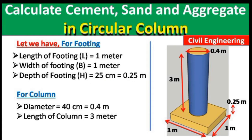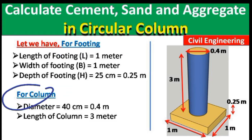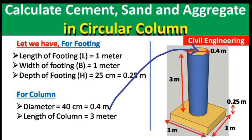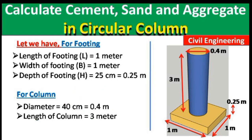To summarize the given data: for the footing — length 1 m, width 1 m, depth 0.25 m. For the column — diameter is 40 cm, which converts to 0.4 meters, and the height of the column is 3 meters.